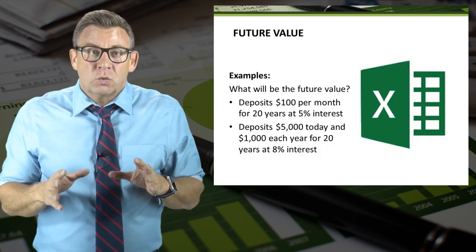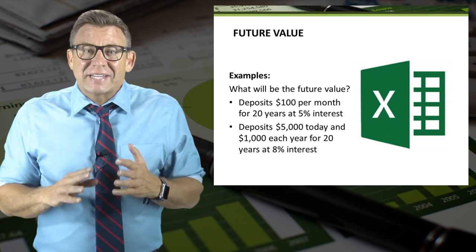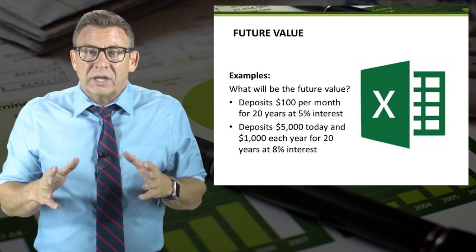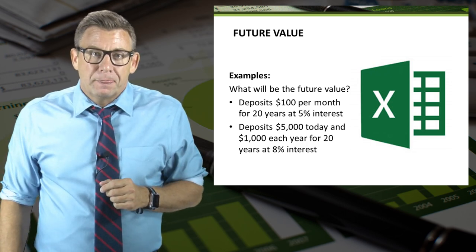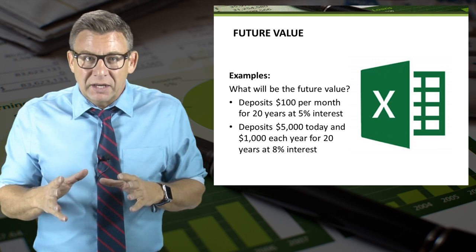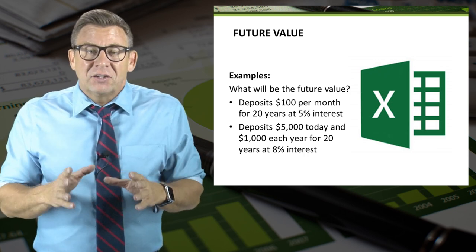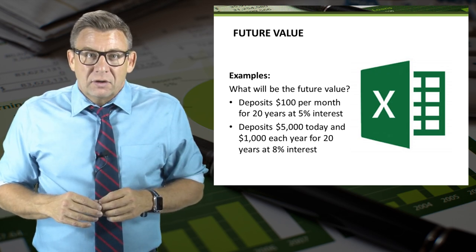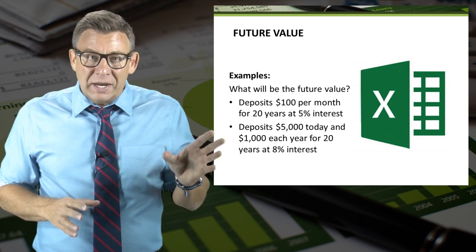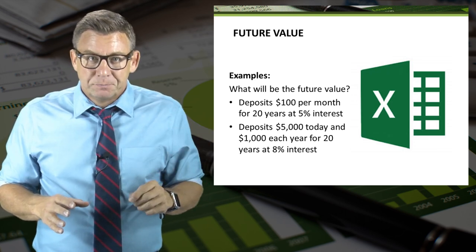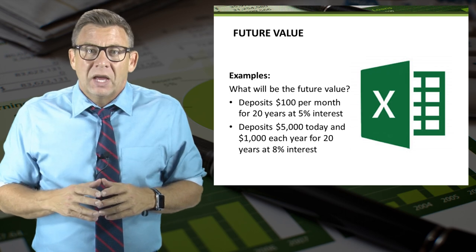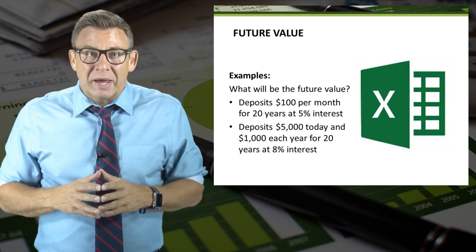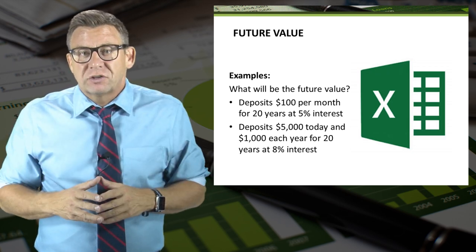So let's look at two more scenarios where we'll have a payment. The first is calculate the future value when deposits of $100 per month for 20 years at 5% interest are made. Since these deposits are monthly, we need to divide the interest rate by 12 and multiply the number of periods by 12. The next is calculate the future value when a one-time deposit of $5,000 is made today — which is the present value — and $1,000 each year for the next 20 years are made, which are payments. We'll assume 8% interest for this one.